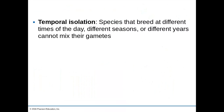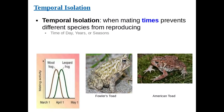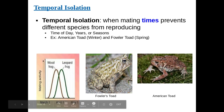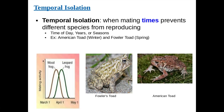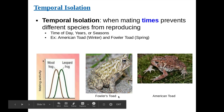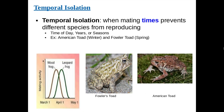Temporal isolation is when species breed at different times of day, different seasons, or different years. Because their counterpart isn't breeding at the same time, they cannot reproduce. For example, the American toad and the Fowler's toad are related species, but the American toad mates in the winter and the Fowler's toad mates in the spring. Because of that, these toads are never going to mate with each other, and that has caused them to develop into their own species.